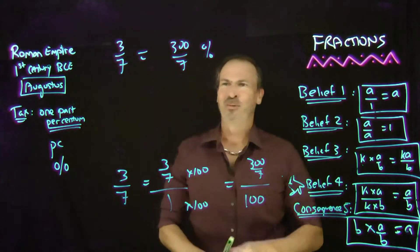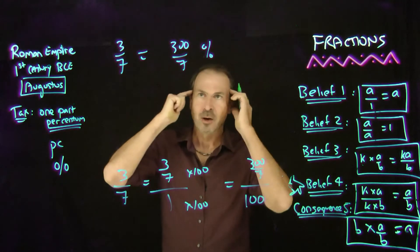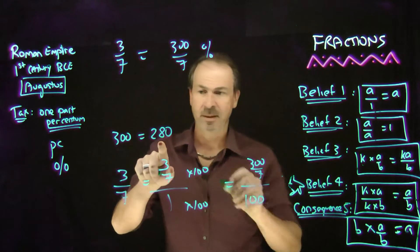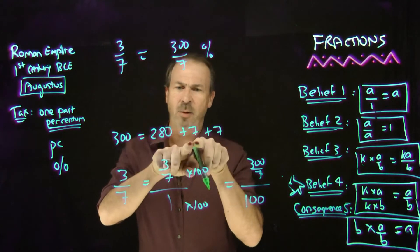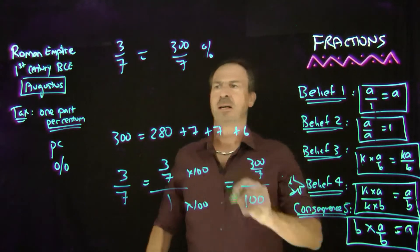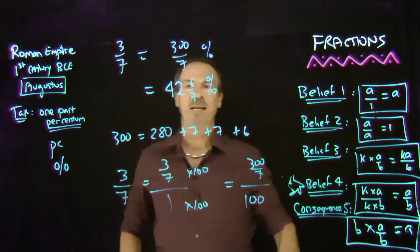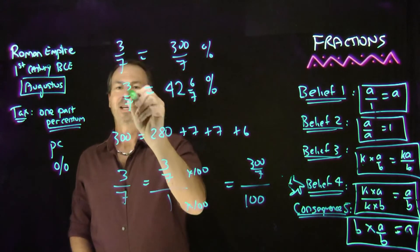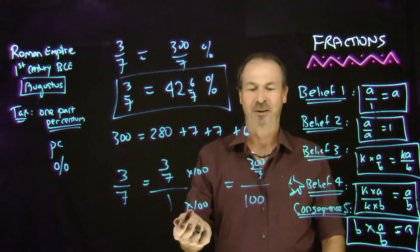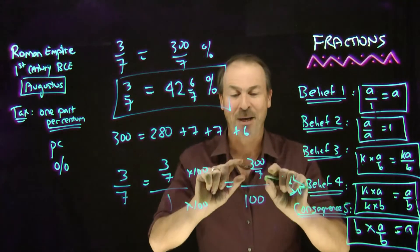300 sevenths — that's kind of weird, but I can make that a little bit simpler by writing it as a mixed number. How many sevens go into 300? Well, 280 is 40 sevens, plus another seven gives 287, plus another gives 294 — so 42 sevens with 6 left over. So when I write this as a mixed number, this is 42 and 6 sevenths percent. The fraction 3 sevenths is actually 42 and 6 sevenths percent. I had to do some sneaky work there, but just make it a denominator of 100 — that's all percent means: part per 100.